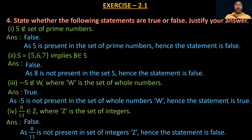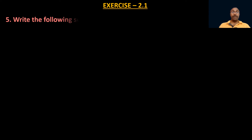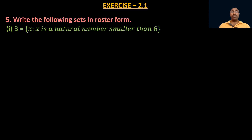Now, write the following sets in roster form. First: B = {x : x is a natural number smaller than 6}. The set builder form is given and we need to list all elements. The natural numbers less than 6 are 1, 2, 3, 4, and 5. Therefore, B = {1, 2, 3, 4, 5}.